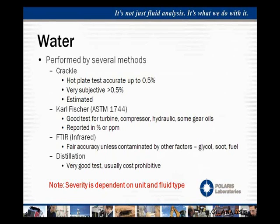When you need exact amounts, that's when we use the Karl Fischer method, using ASTM method 1744 for this calculation. This is what you would want to use for turbines, compressors, hydraulics, and some gear oils depending on the specific application. It's reported in percent or parts per million depending on the lab or how you want to see the results. It's a very exact test used for applications where you need a very low amount of water and need an exact count. Other methods include FTIR — Fourier Transform Infrared Technology — which is fairly accurate unless there's other contamination like glycol or sodium, but can be slightly expensive. Distillation is another good method but is usually cost prohibitive for regular use.